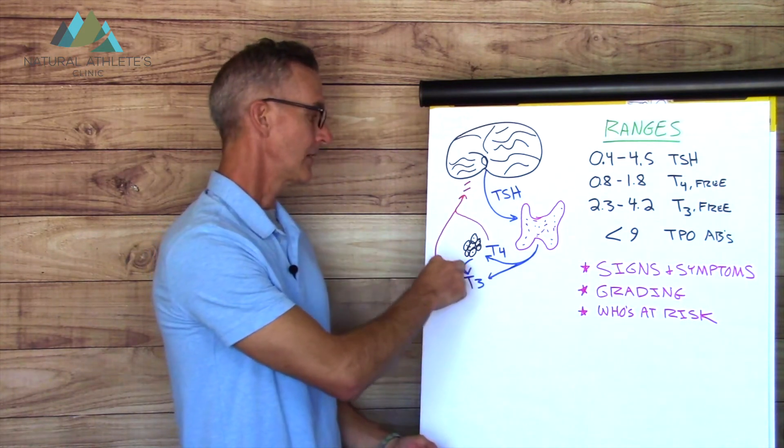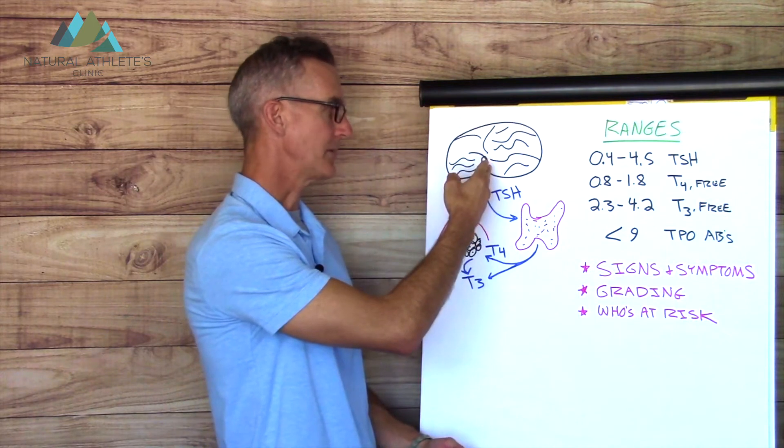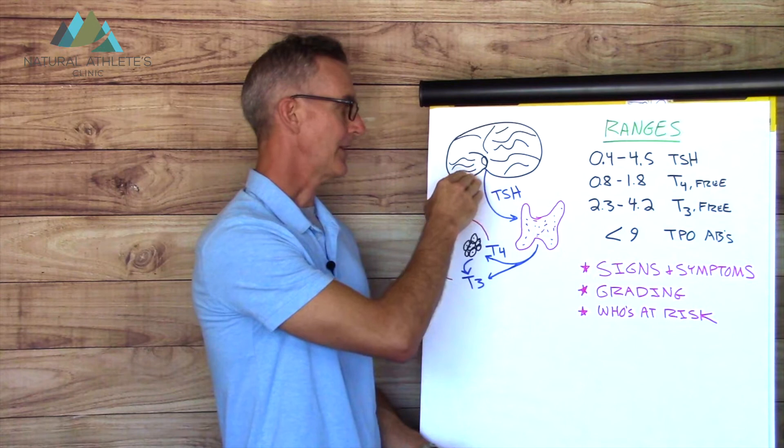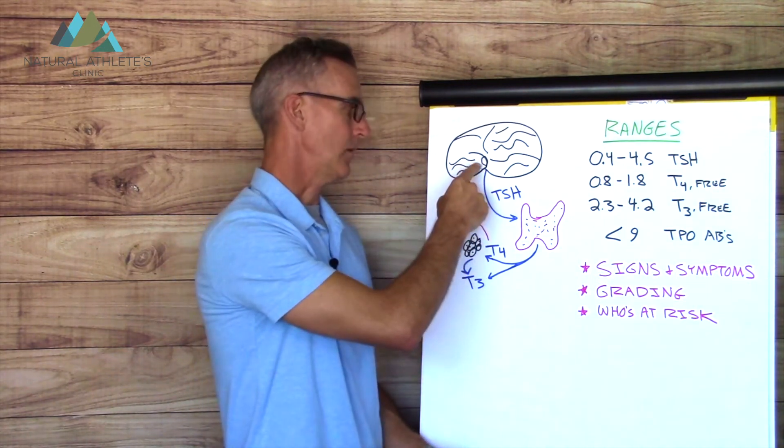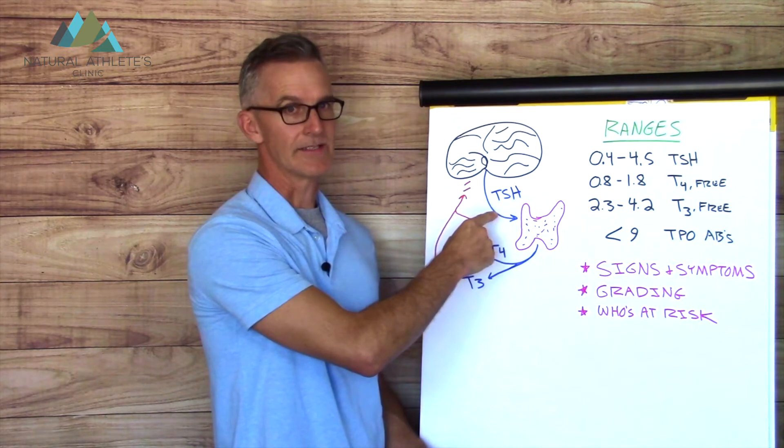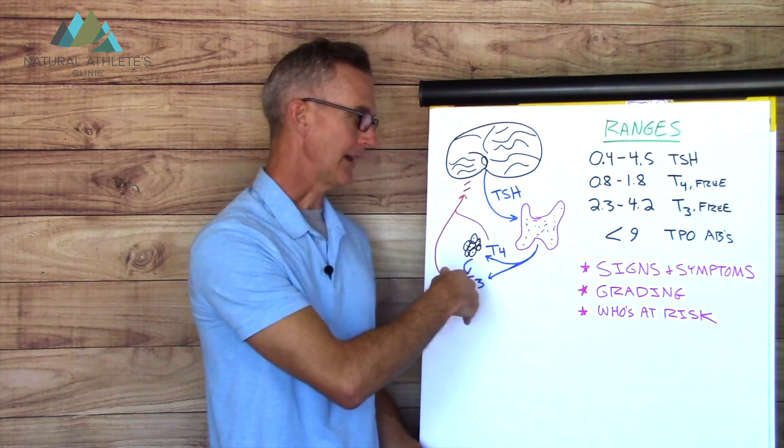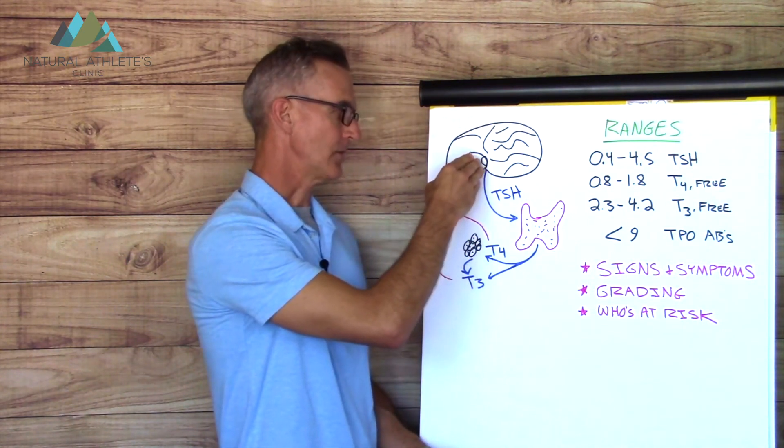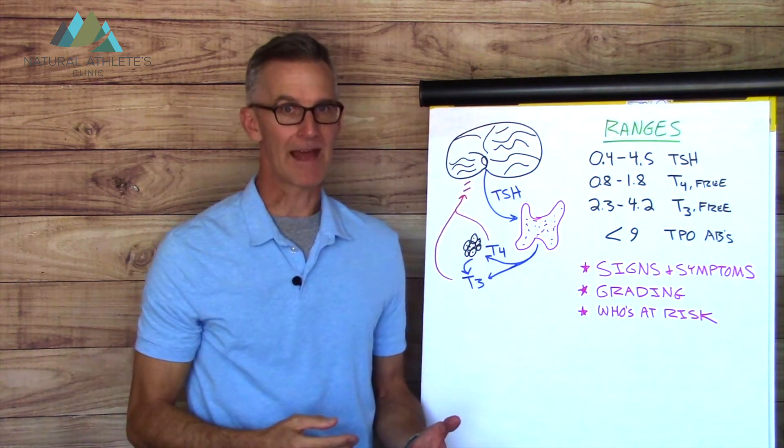Now the T4 and the T3 circulate around the body, they do their thing, they also find their way back into the brain where the pituitary senses their levels. Now if the pituitary thinks that there is not enough T4 and T3 in the body, it will increase the rate at which TSH is secreted, so the TSH comes up and stimulates the thyroid gland. Likewise, if there's too much T4 or T3, the pituitary gland will shut down that TSH production. So this is what's referred to as a negative feedback loop.